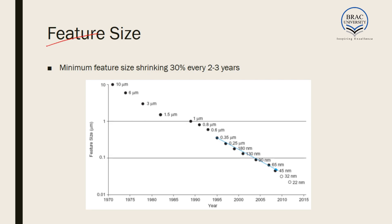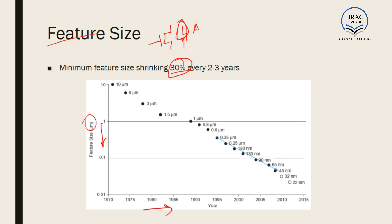Another important thing is feature size. We want to decrease the size of transistors, and since we are working with MOS technology, the MOS has two key parameters — a length and an area. This length of the MOSFET is called the feature size of the transistor, and we want to decrease this length. Every two or three years there is about a 30% decrease in feature size. From the graph we can see that as the years progress feature size decreases — it was very high in micrometers in the 1970s but by 2015 it was about 22 nanometers. At present it has decreased to about 7 nanometers.